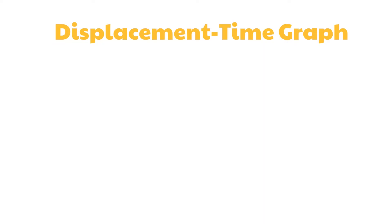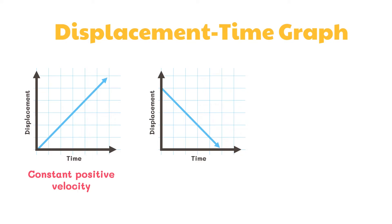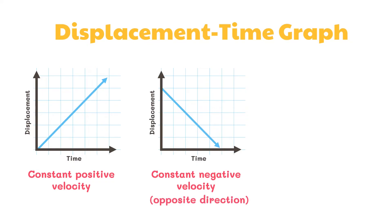A motion described as a constant positive velocity results in a constant and positive slope when plotted in a displacement-time graph. A constant negative velocity results in a constant and negative slope. A negative slope indicates that the direction of the motion is opposite to that of the motion with a positive slope.